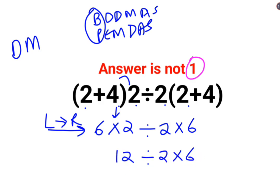So 12 divided by 2 is the first operation which happens on your left-hand side. That is the first thing we will do. 12 divided by 2 is 6, multiplied by 6. So the answer for this question is supposed to be 36.